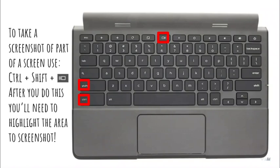After you press that combination of three buttons, your screen will kind of go dark, and then you'll need to select, using your mouse or mouse pad, the area that you want to take a screenshot of. That will then be copied to your clipboard, and you can use the copy function that pops up in the window, and then you can paste that somewhere.